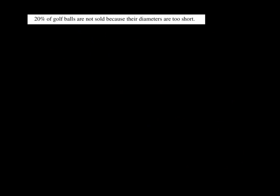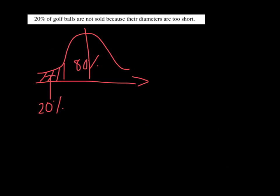So 20% of golf balls are not sold because their diameters are too short. So if I sketch my curve again, that means that area has to be 20%. We always work with the larger area. So this time I'm looking for 80%. So I want Phi of Z to be 0.8.